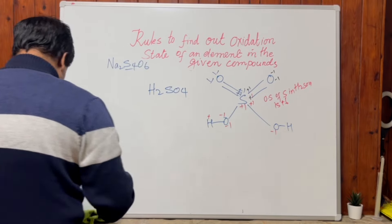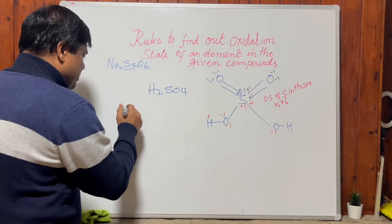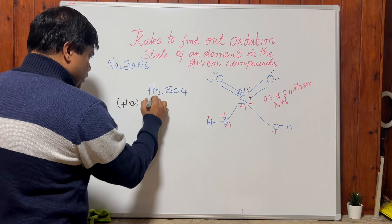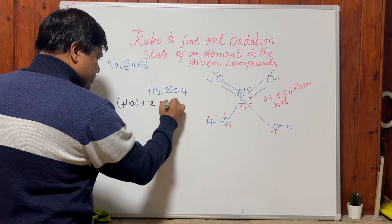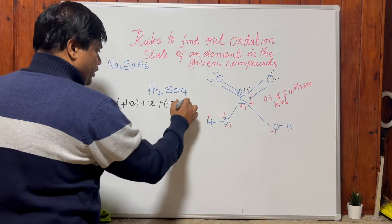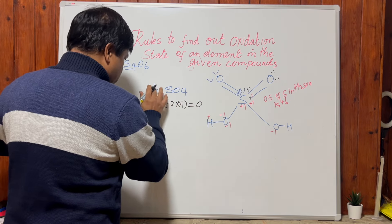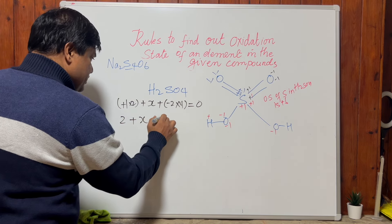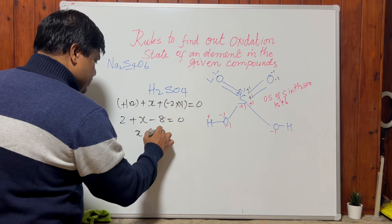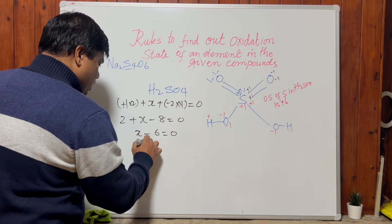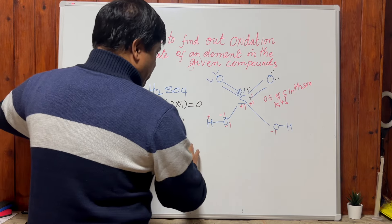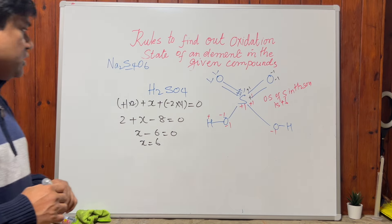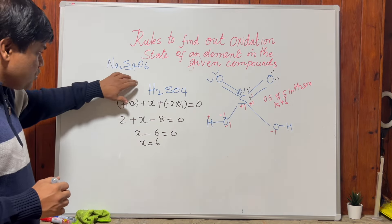Let me quickly confirm through the formula method. Hydrogen is plus one, times two. Sulfur is x. Oxygen is minus two, times four. Overall charge equals zero. So: 2 + x − 8 = 0 → x − 6 = 0 → x = +6. By both methods we get the oxidation state of sulfur in sulfuric acid as plus six.